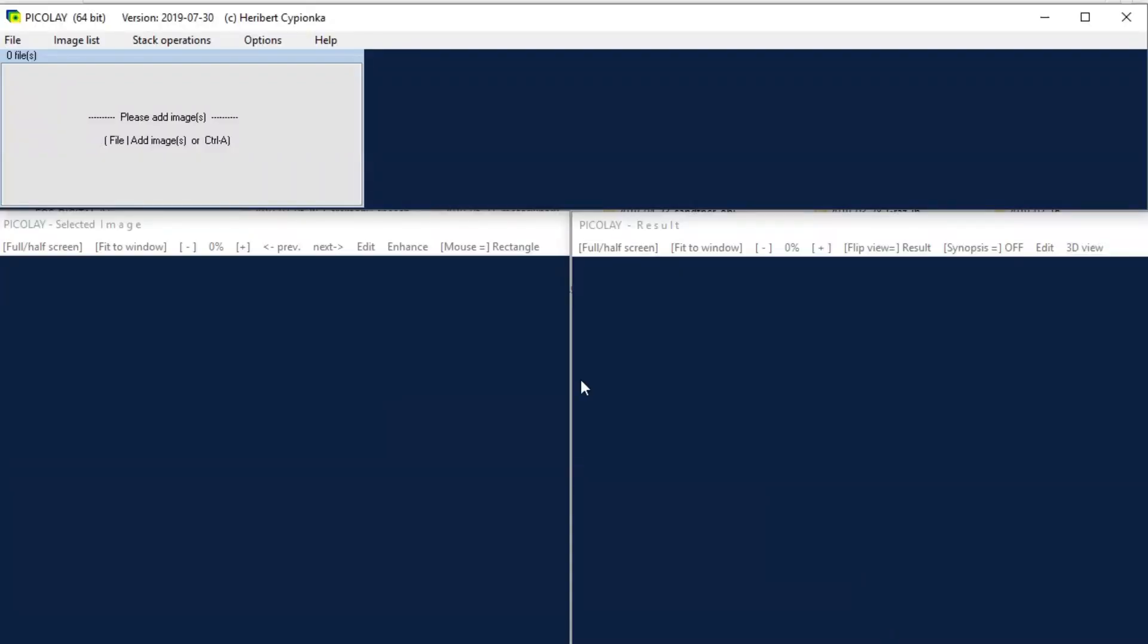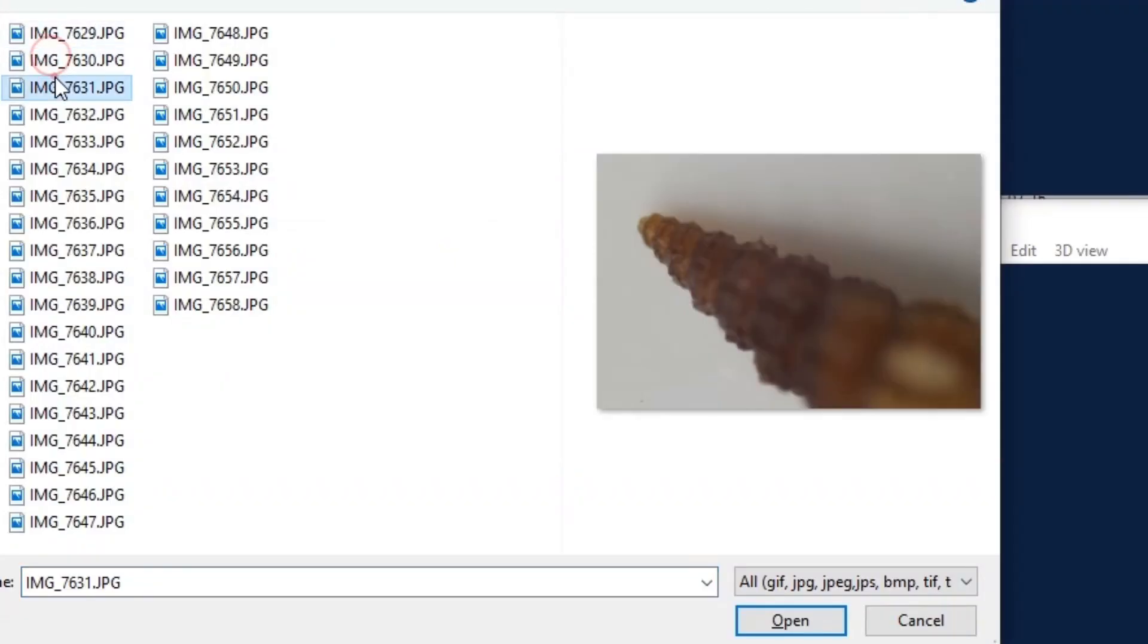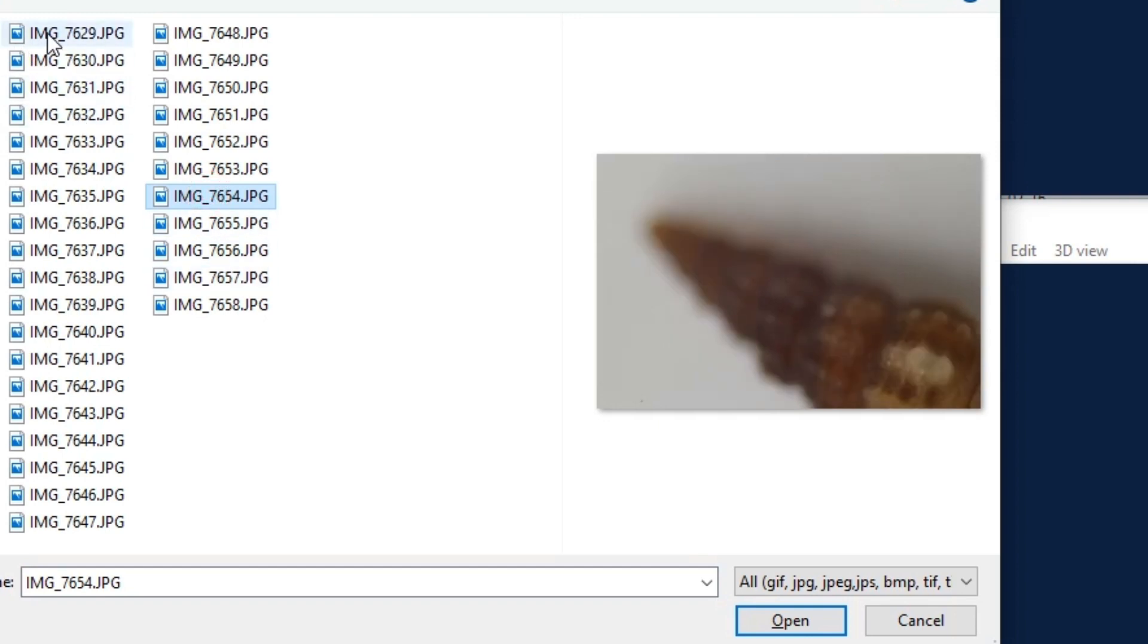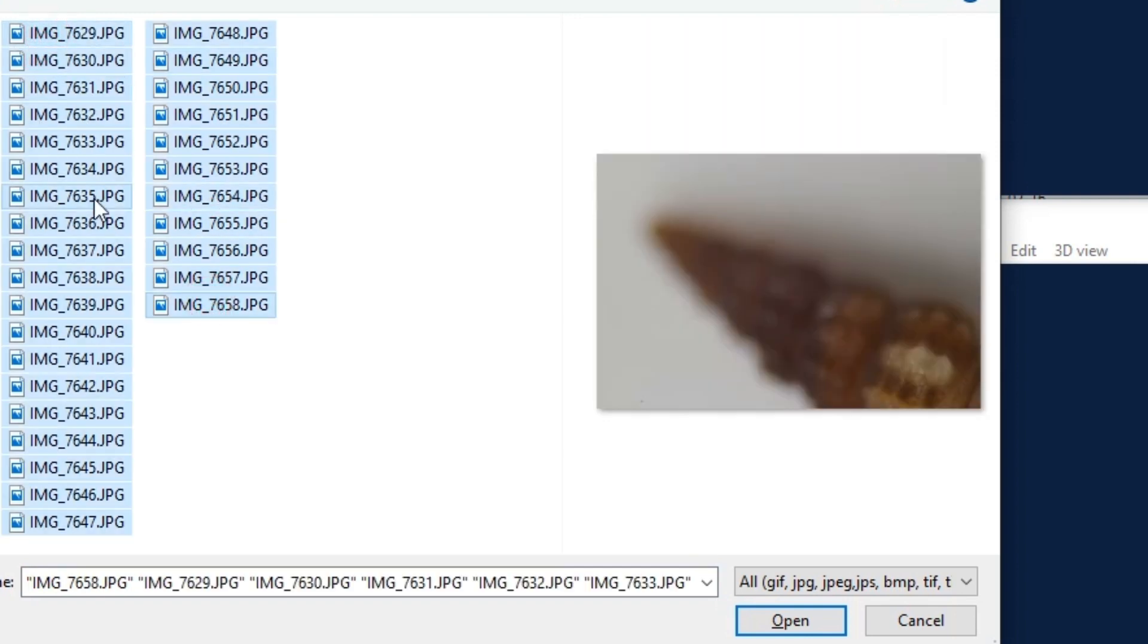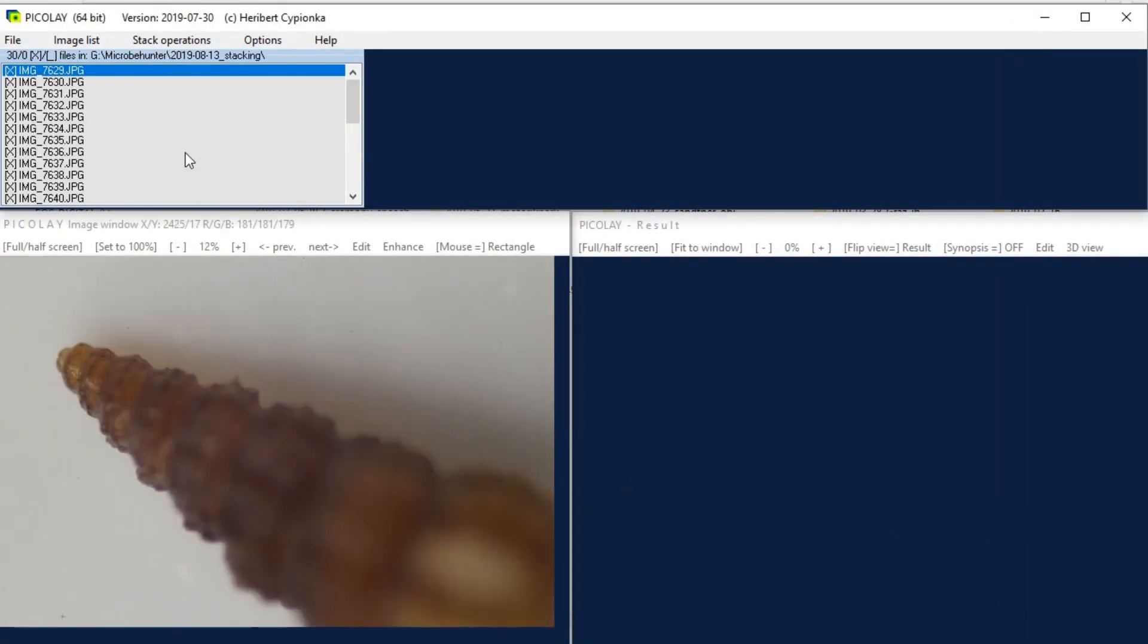So this is what you get when you start the program and on the top left this is where you can add the images you press ctrl a and you open the images that you want to stack together and then you select them first you click open and in my case the images are unfortunately reversed they are in the wrong order.